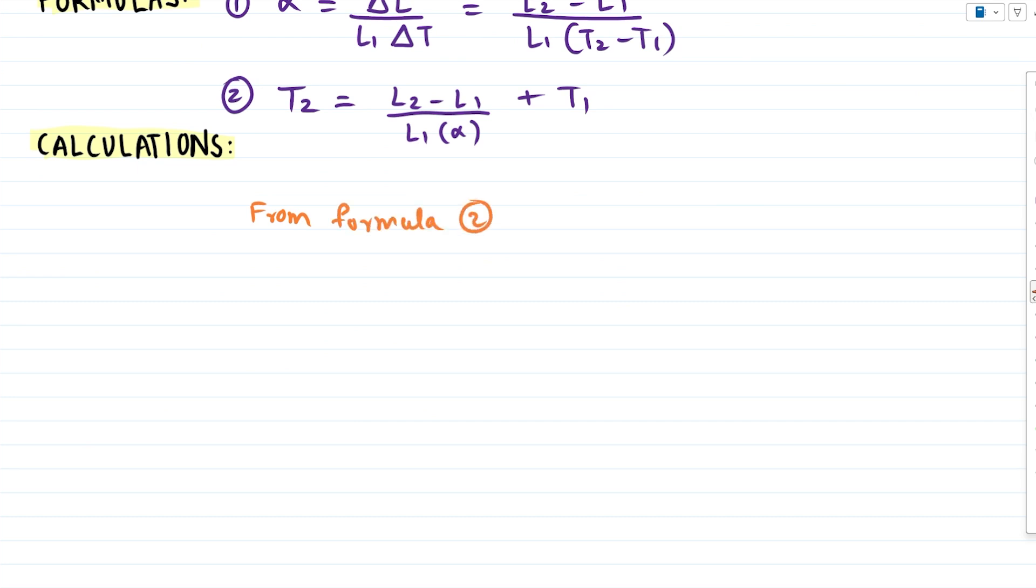From formula number 2, we get T2 equals L2 minus L1 upon L1 into alpha plus T1. So 1.5 minus 1.47 upon 1.47 into alpha for iron is 1.2 into 10 raised to minus 5, plus T1 value is 27 degree Celsius.